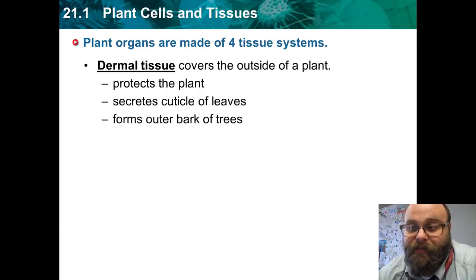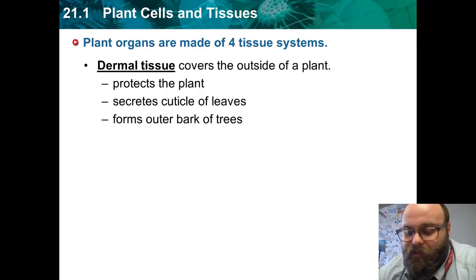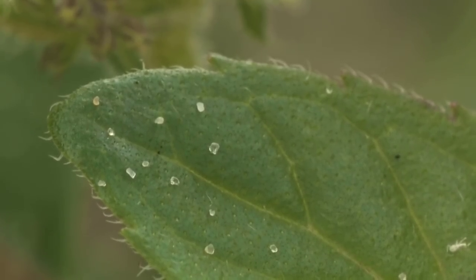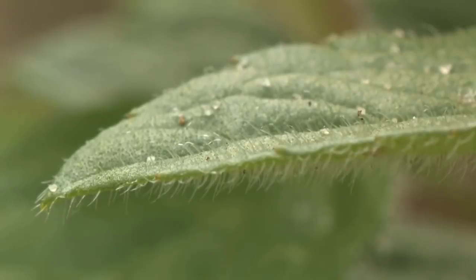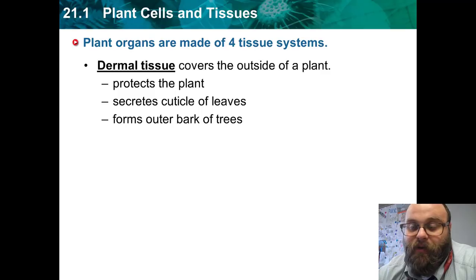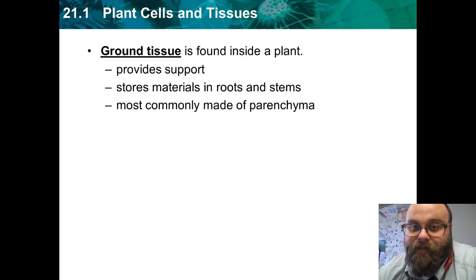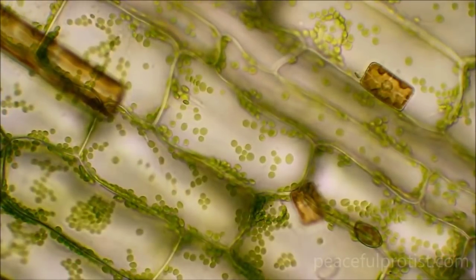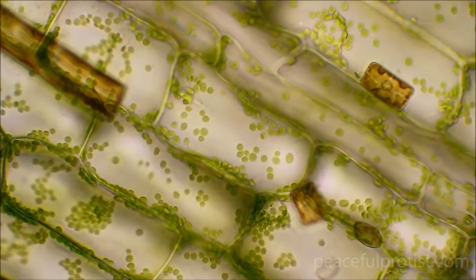The first one is dermal tissue. A way to remember this is that your dermis is your skin, so dermal tissue is like the skin for plants — it's protective, and for trees it makes the bark. There's also ground tissue, which is found inside plants; it's supportive and stores materials like sugars and water inside roots and stems.